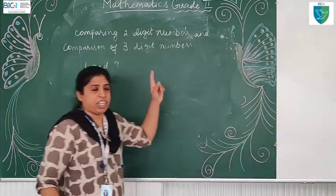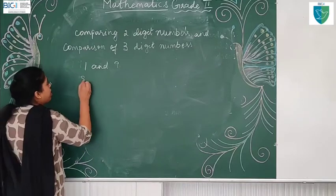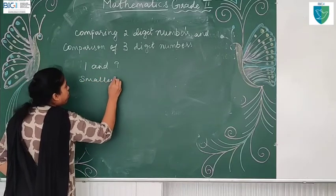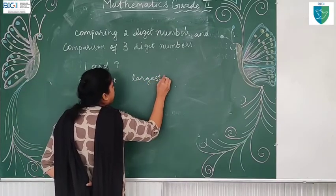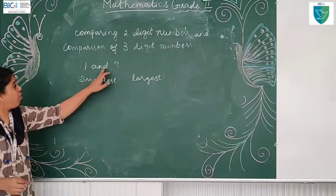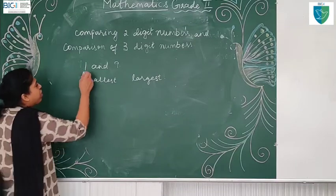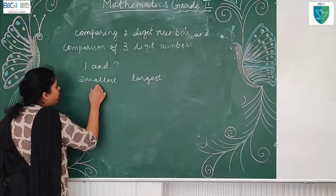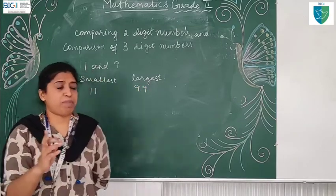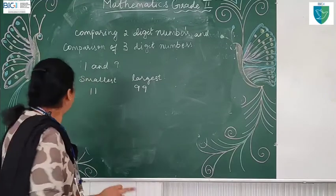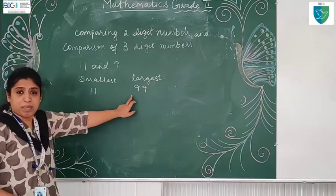Now with repeating: what is the smallest number in 1 and 9? There are two types — we repeat the numbers and without repeating the numbers. Now 1 and 9: the smallest number is 11 and the largest number is 99.